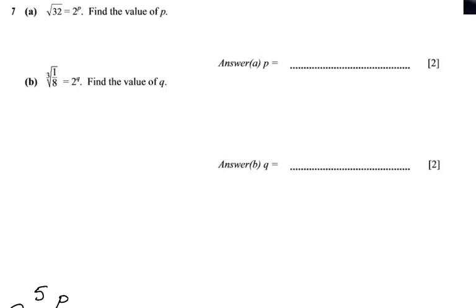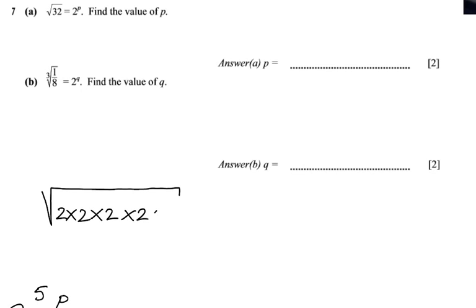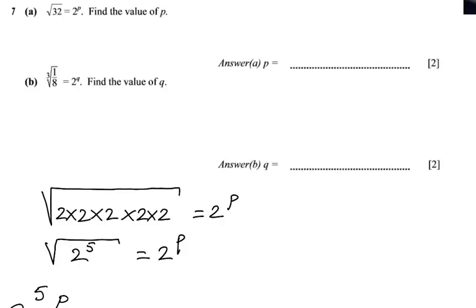I'm going to rewrite the square root of 32 as something with base 2. Let's start with 32 — hopefully you realize that 32 is 2 × 2 × 2 × 2 × 2, so 32 equals 2 to the power 5. Therefore, the square root of 2 to the power 5 equals 2 to the power p. I'm just manipulating the question so I can answer it. I now have my term with a base of 2, but there's still the square root sign.